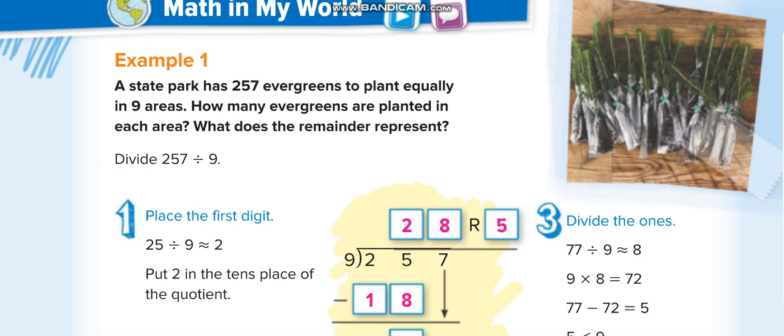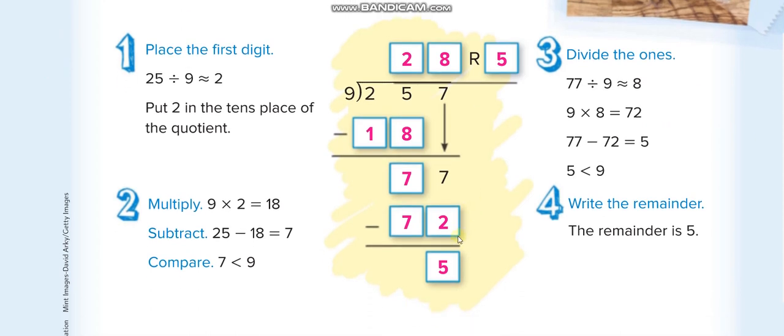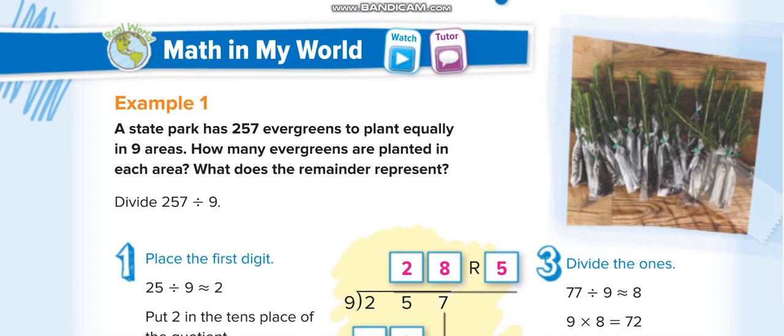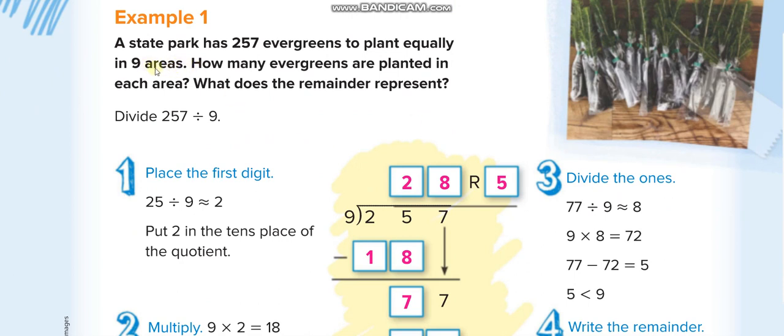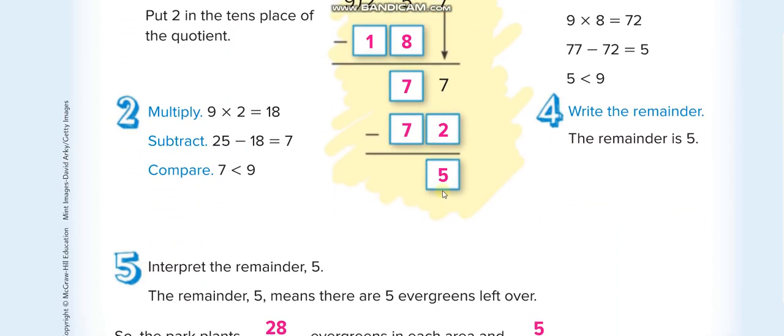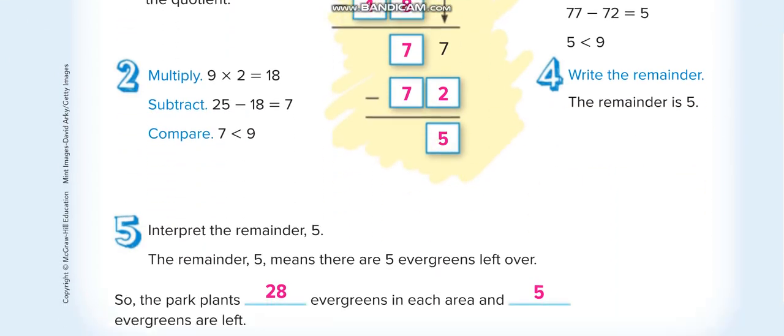In interpreting the remainder, the statement of the question is most important. They want to fix them in 9 areas equally. So when they divide 257 with 9, we get remainder 5. These are plants, and they just need the 9 areas. They don't want to increase the areas. So the answer is 28, and the remaining 5 plants they can use somewhere else or throw them. We will not add something in the quotient.